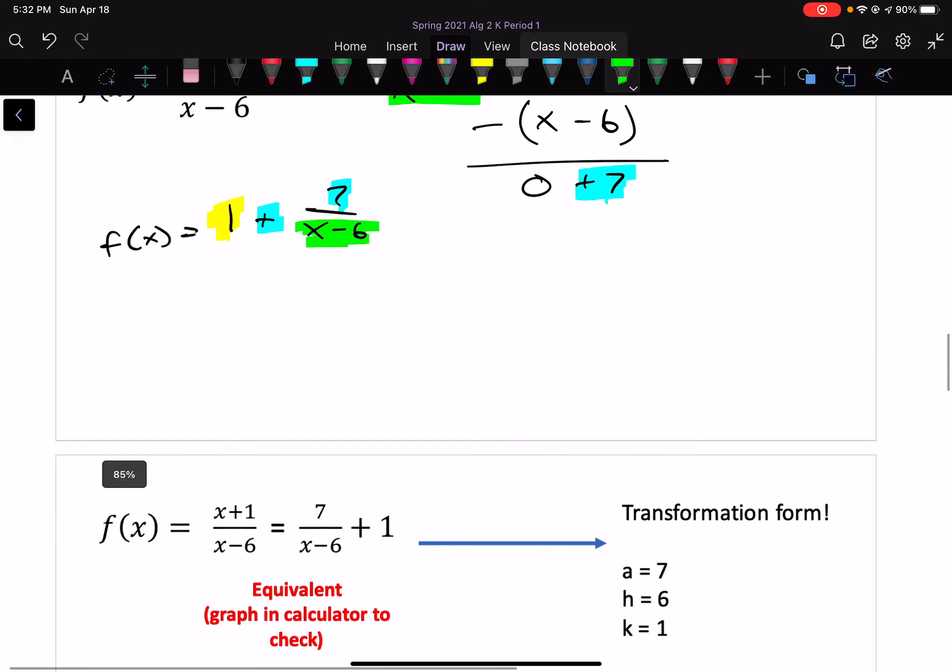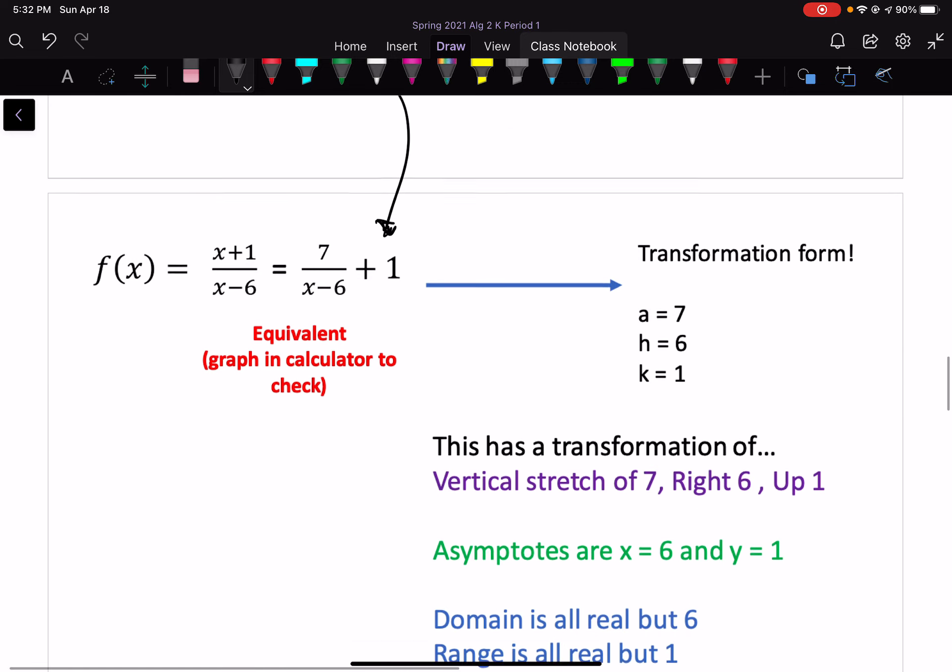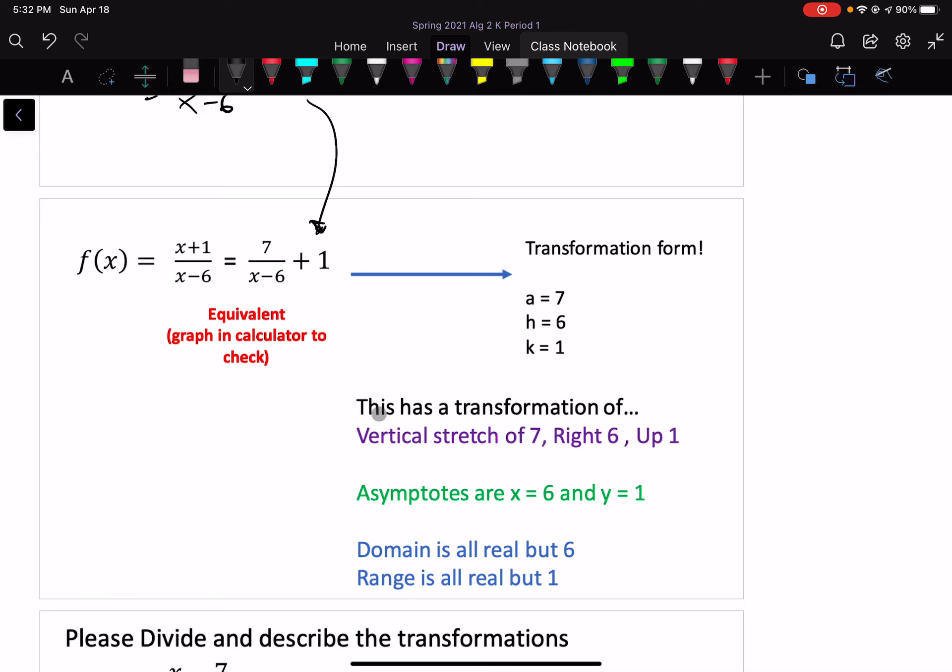Now, we could rewrite this in the opposite way, as opposed to 1 plus this as 7 over x minus 6 plus 1. Essentially, switch the order. That brings us down into transformation form, which tells us that we have an a of 7, so a vertical stretch of 7. We have an h of 6, so we did minus 6 here, so we went right 6. We have a plus 1, so that means we're going up 1. So our asymptotes are x equals 6 and y equals 1. That also tells us that our domain is all real numbers, but not 6. Range is all real numbers, but not 1.